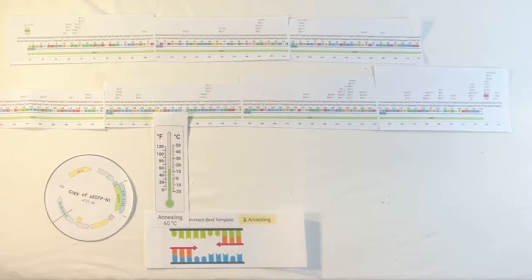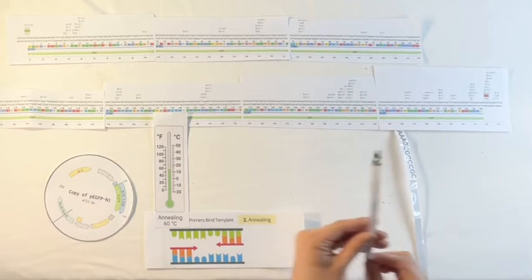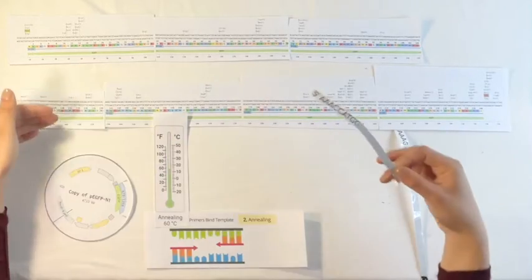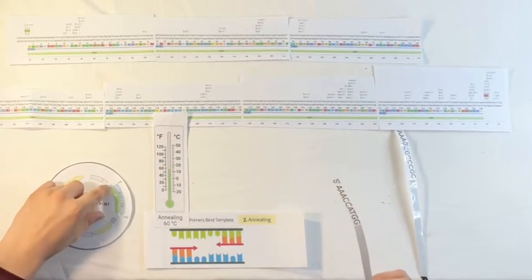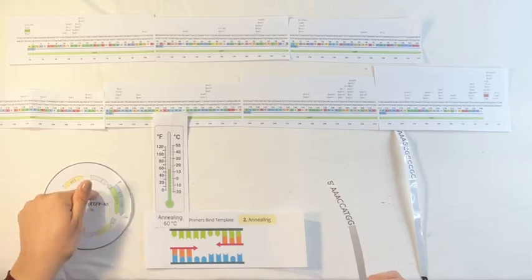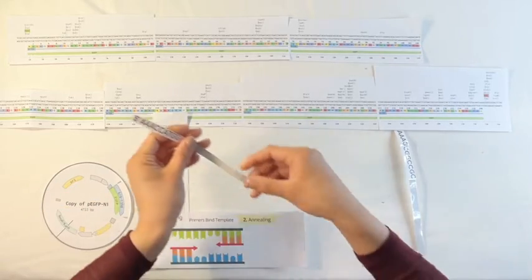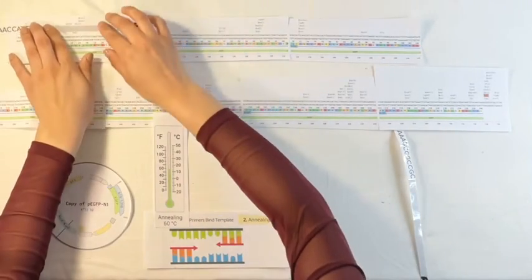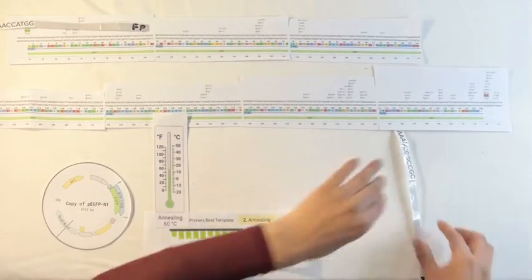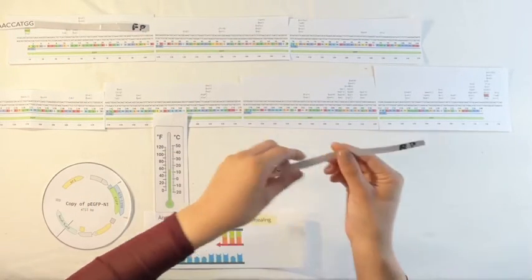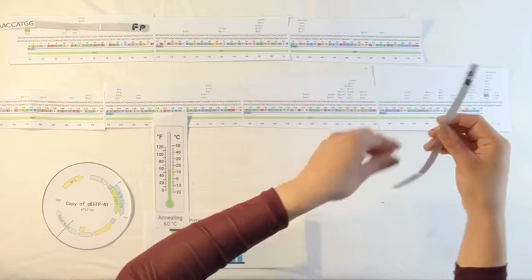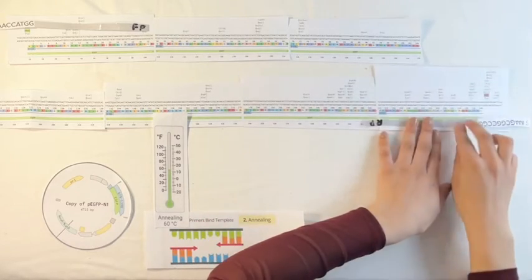During the decrease of this temperature, the primers that we added are going to be able to anneal to sites that are on both ends of the EGFP gene. For example, our forward primer is going to bind to one side of the EGFP gene, and the reverse primer will bind to the other side of the EGFP gene.